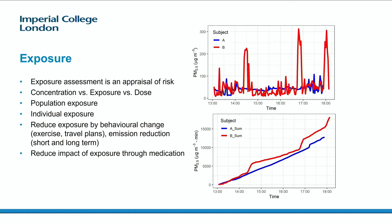It's important to understand exposure because we can do something about it. We can induce behavioural change — we can change when we exercise, we can change the routes we take. We can encourage government to change policy and reduce exposure in that way, either in the short term or the long term. By notification — and Frank showed some examples earlier — we can encourage people to take medication as well.